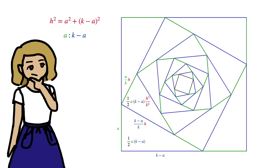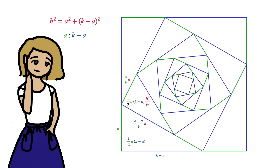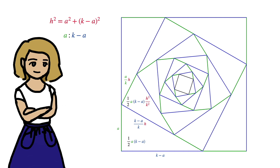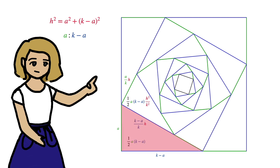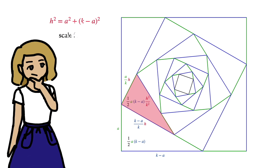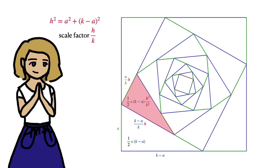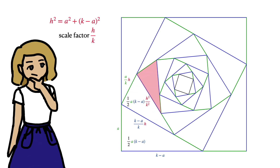So now we find this to be the area of the triangle. Now we could repeat this process to find the area of the next triangle, but there's also a faster way. To get from this triangle to this one, we had to scale it by a factor of h on k. And every layer of this fractal is similar to the last, so to get from this triangle to the next one, we just scale it by h on k. As for the area, it's proportional to the square of the scale factor, so the area scales by h squared on k squared, and so on.